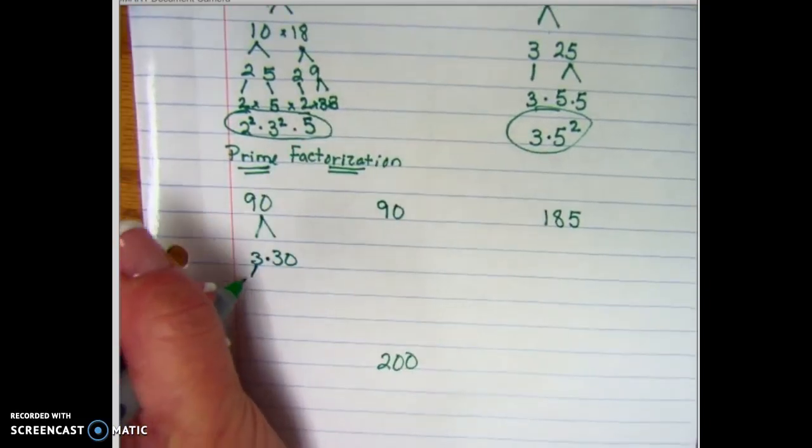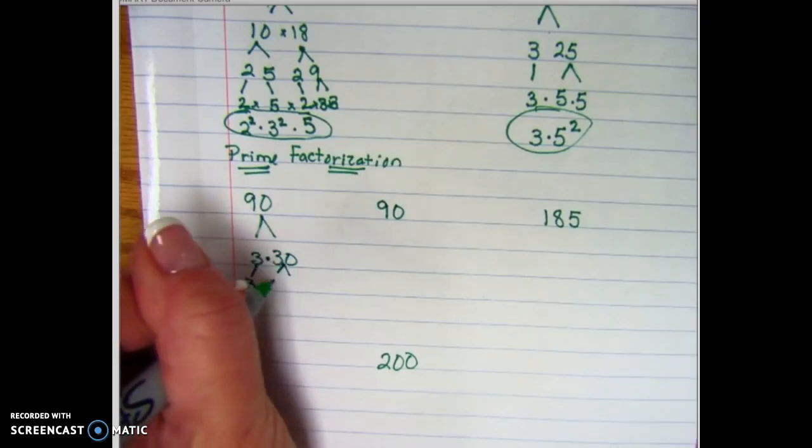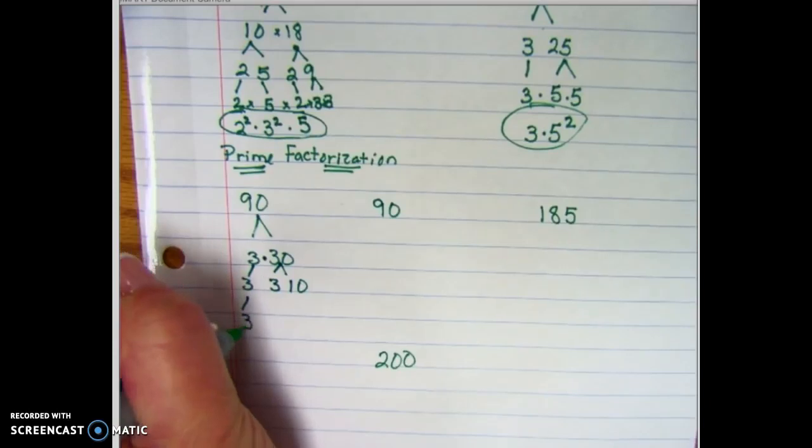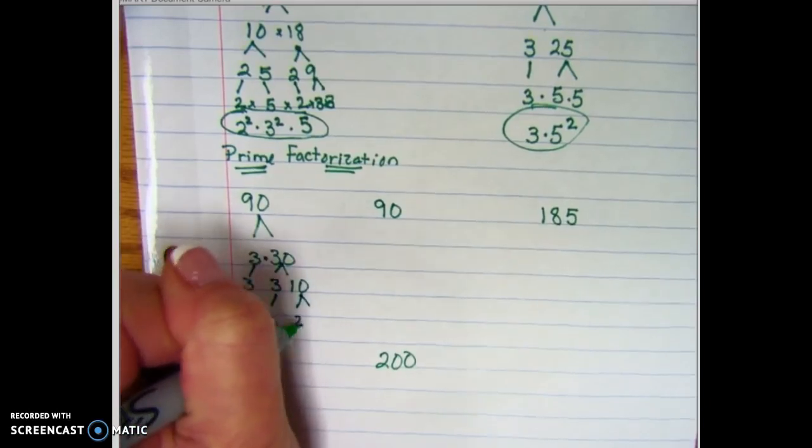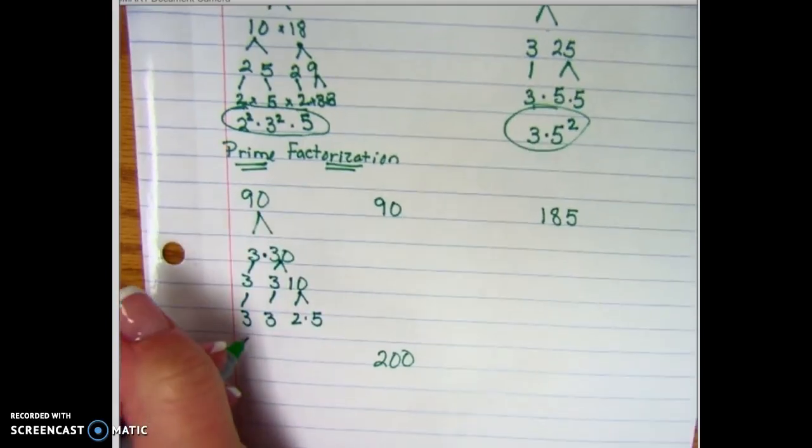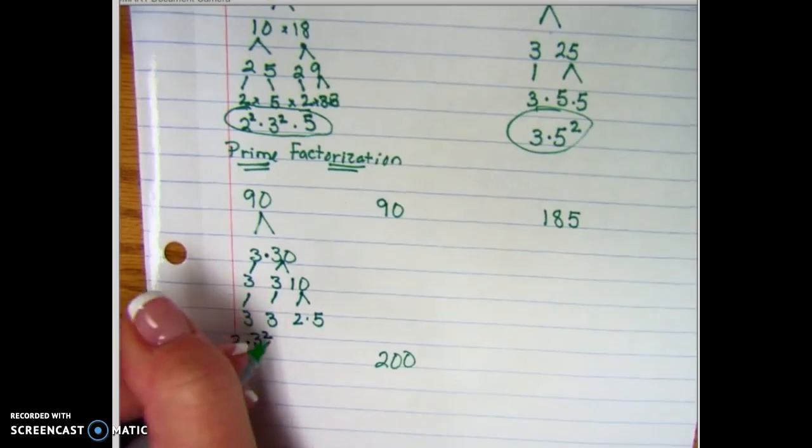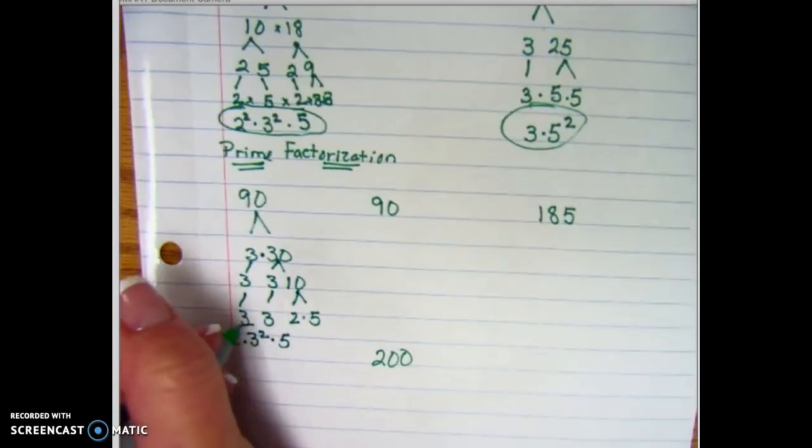The 3 stays a 3, then this becomes a 3 times a 10. The 3 stays a 3, this 3 stays a 3, and the 10 becomes a 2 times 5. So the prime factorization of this would be - oops - 2 times 3 to the second power times 5. Almost didn't go in order there.